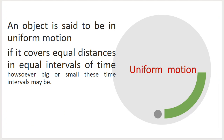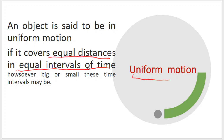Another two types of motions are uniform and non-uniform motion. Uniform motion means an object covers equal distances in equal intervals of time, howsoever big or small these time intervals may be.